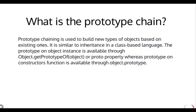Prototype chaining is used to build a new type of object based on existing ones. We are creating a new object from an existing object. When we try to access a local property in that object, if it's not found, it tries to check that property in the proto or prototype of the parent — because a prototype chain exists in objects and in functions. Whenever we try to get a property, it checks first, and if not found, it checks the prototype properties.